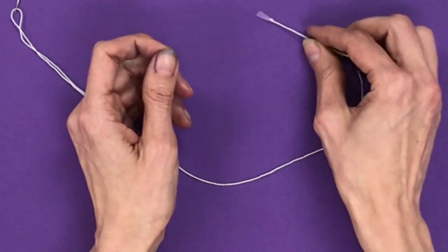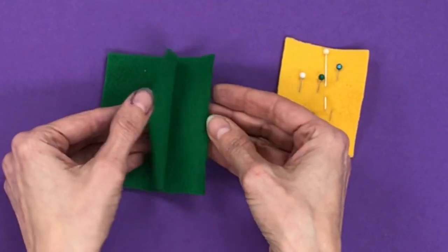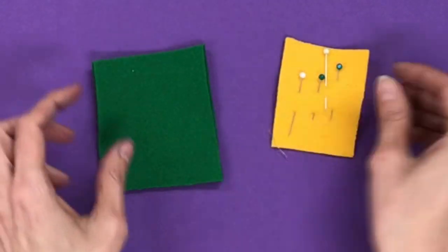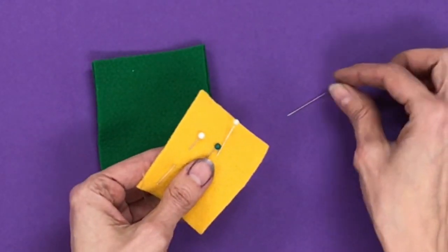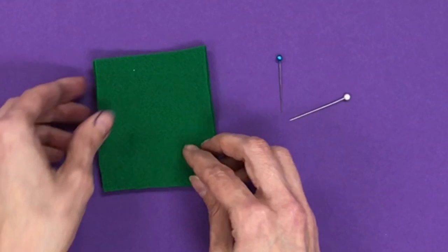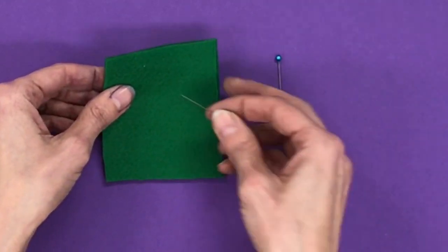Before sewing two pieces of fabric together, it's important to pin them together so they don't move around as you're sewing. These are called pins, just like the needle. Be careful because they're sharp.